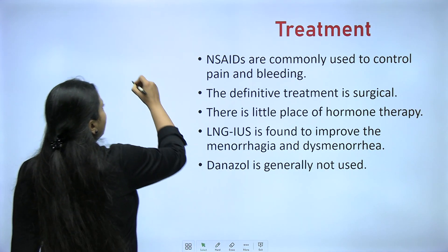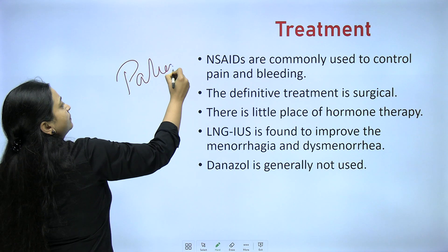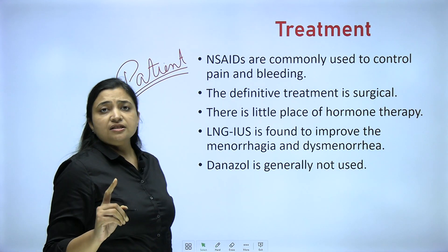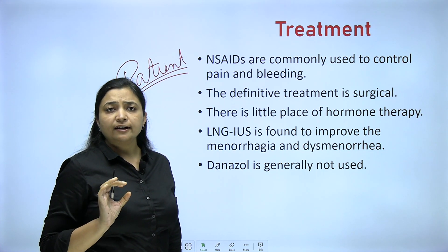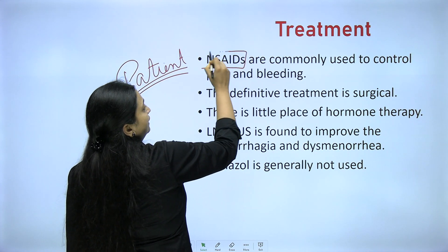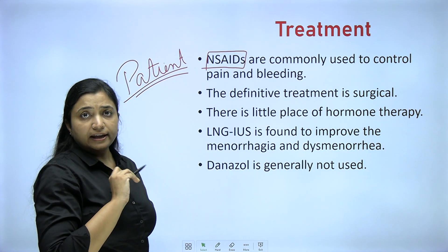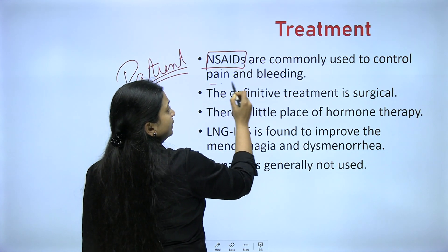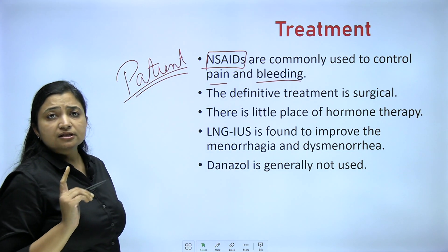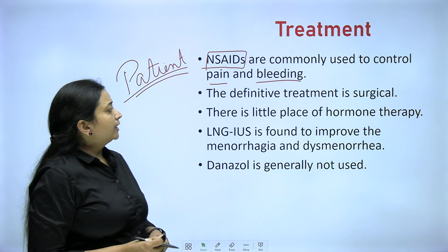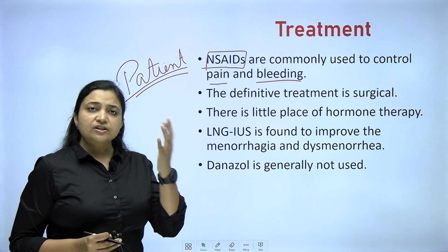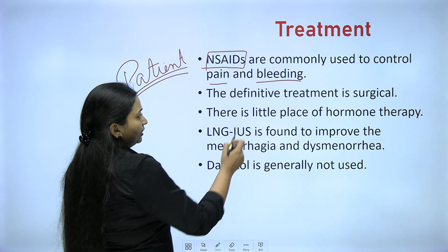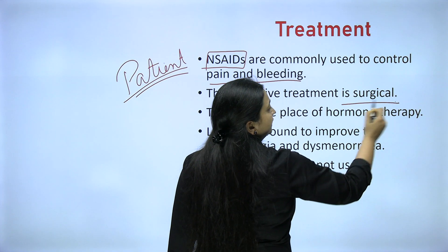It all depends on the patient's condition. If the patient has severe pain or severe menorrhagia, then surgery is the choice. But if the complaint is mild pain, then NSAIDs — non-steroidal anti-inflammatory drugs like ibuprofen — are the drugs of choice to control pain and bleeding. If the main issue is dysmenorrhea with some heavy bleeding, you can use NSAIDs and let the patient attain menopause. If not relieved, the definitive treatment is definitely surgical.